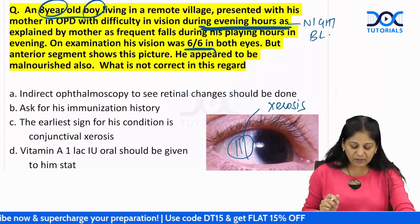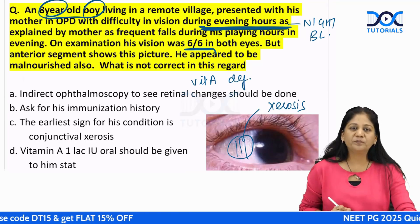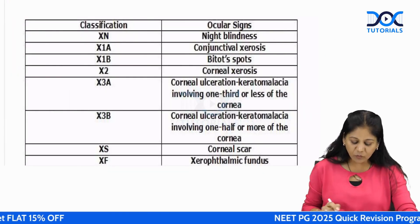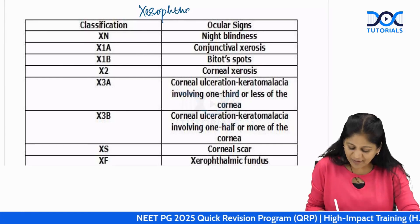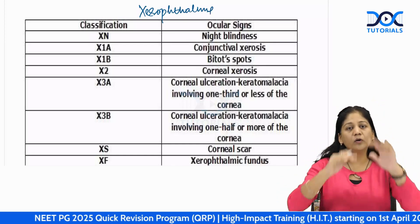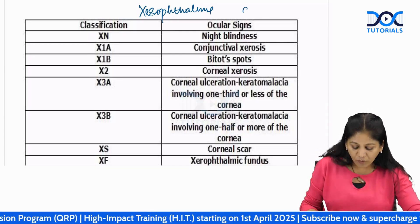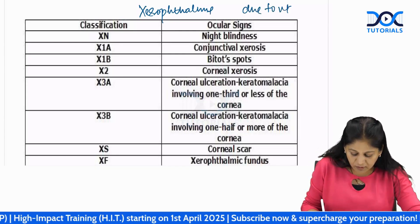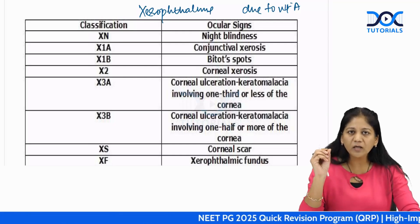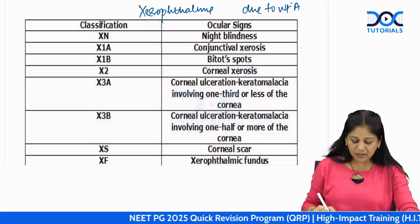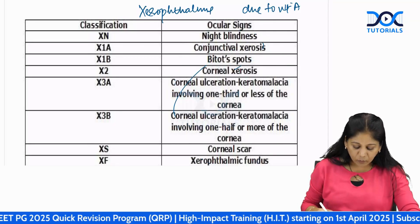This is due to vitamin A deficiency, so we call this condition xerophthalmia. Xerophthalmia is a spectrum of ocular diseases due to vitamin A deficiency. Do not say xerophthalmia is only dry eye or only night blindness — it encompasses everything.